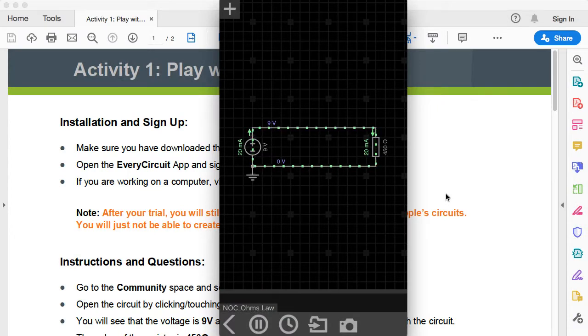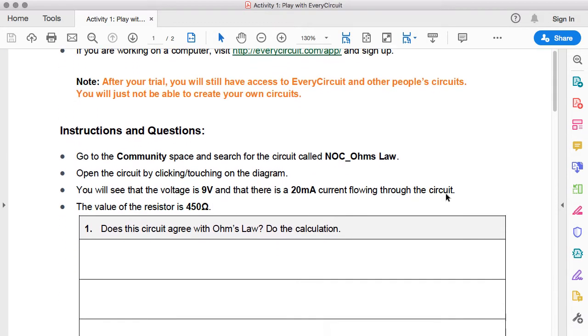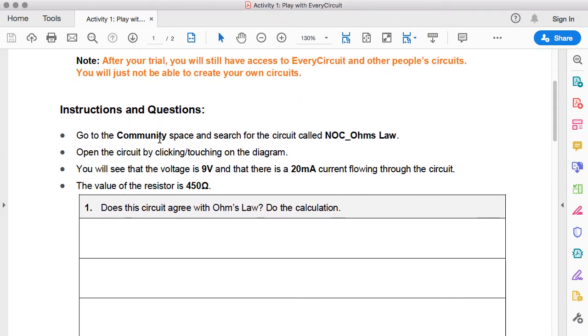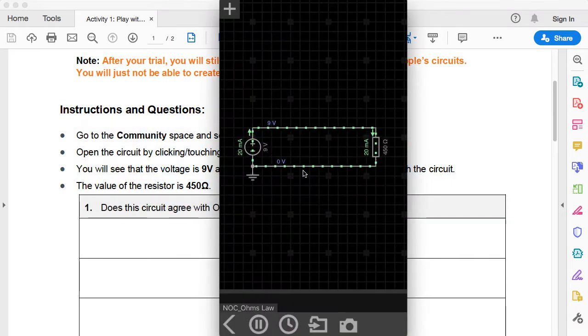Now that we have the circuit open let's go back to the activity sheet to see what we need to do. We've opened the community space and we've searched for the circuit called NOC Ohms Law which we have opened already. The activity sheet says that we can see that the voltage is 9 volts and the amperage is 20 milliamps. Let's see how we can see that.